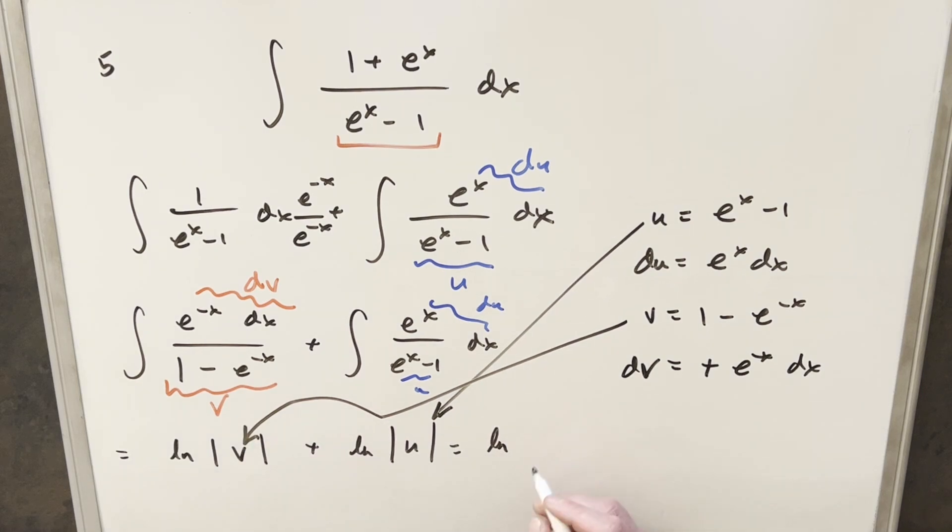So let's see what we have. We've got natural log, our v value, 1 minus e minus x. And then here we got, this is going to be e to the x minus 1.